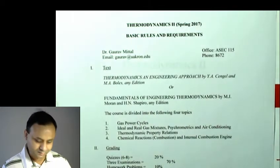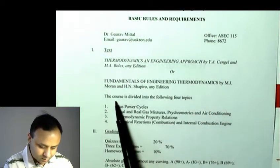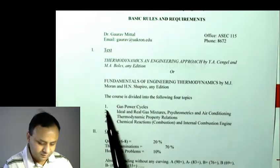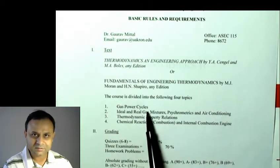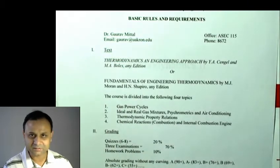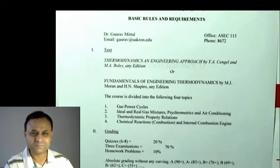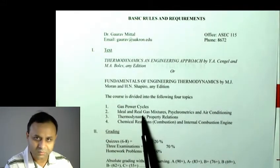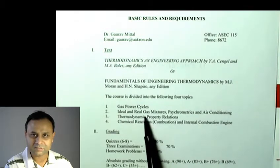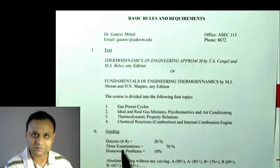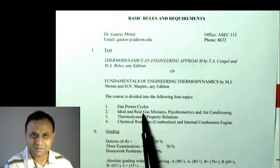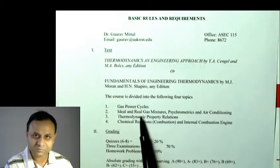This course is divided into four topics. The first topic is gas power cycles. In Thermodynamics 1, we talked about vapor power cycles — the Rankine cycle — where the working fluid is sometimes liquid and sometimes vapor. In this course, we will talk about gas power cycles where the working fluid is always in the gas phase. This first topic will be extremely easy if you understood Thermo 1 well.